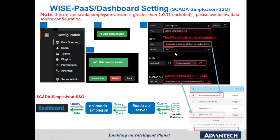If the version is greater than or equal to 1.0.11, please use the setting on this page. The HTTP URL should be the URL of your API SCADA Simple JSON — you can check the route at the management portal. For Access, please choose Direct. For Authorization, please choose With Credentials. For the SCADA API field, use the route of your Portal SCADA URL plus /api. Note that in both the HTTP URL and SCADA API URL, you must type HTTPS before your route.